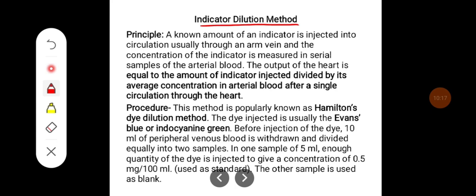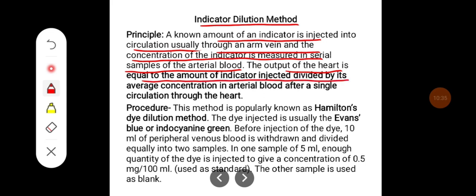The second method is the indicator dilution method. The principle is that a known amount of indicator is injected into the circulation, usually through an arm vein, and the concentration of the indicator is measured in serial samples of arterial blood. The output of the heart equals the amount of indicator injected divided by its average concentration in arterial blood after a single circulation through the heart.